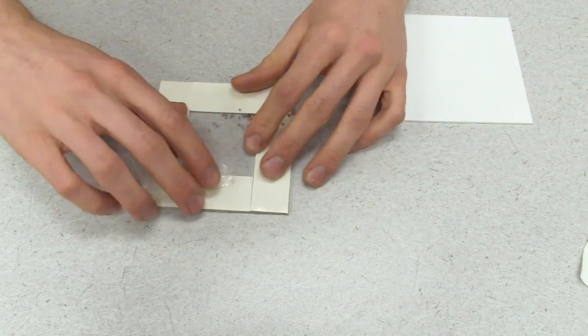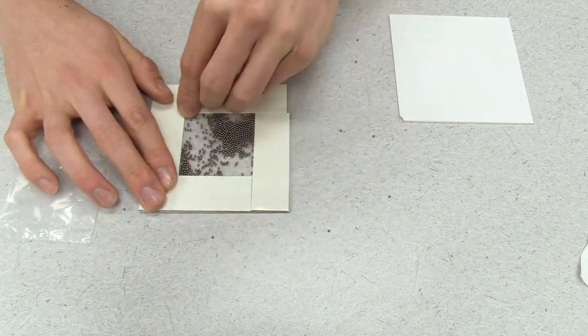Then carefully put your balls in the middle of the square made by the four pieces of tape.